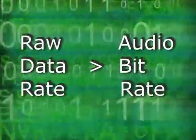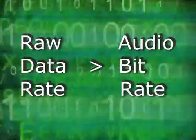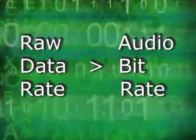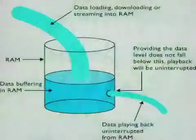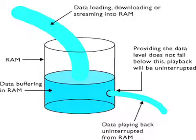Since the raw data rate is considerably higher than the audio bit rate, meaning that digital devices can read data faster than they play audio, they are continuously filling RAM buffers so that the left and right channels of a CD or the six surround stems of a Dolby Digital movie play with no noticeable breaks.